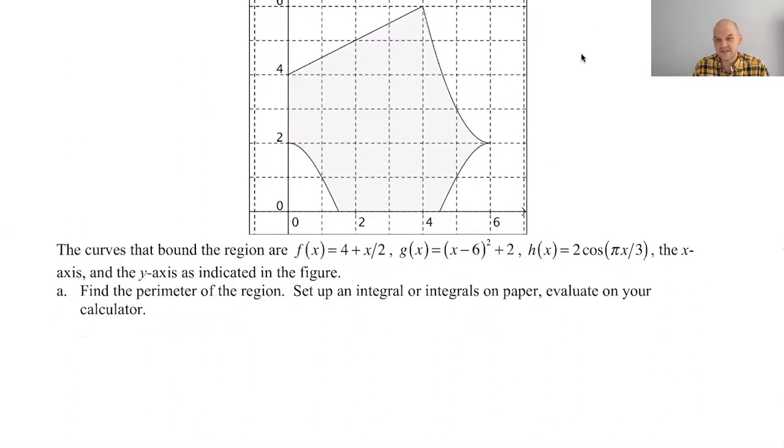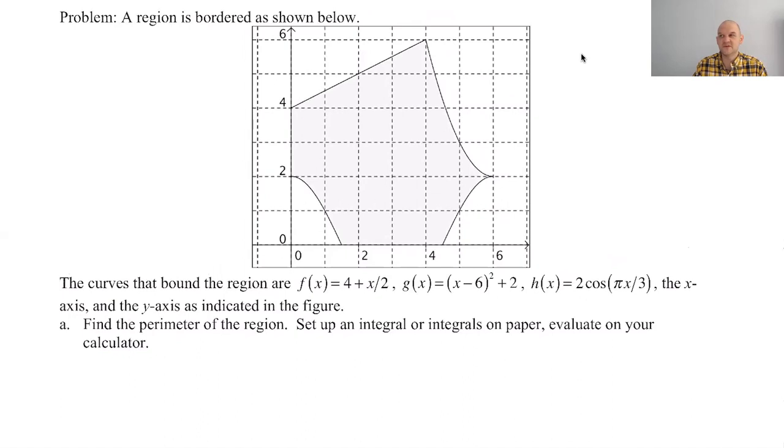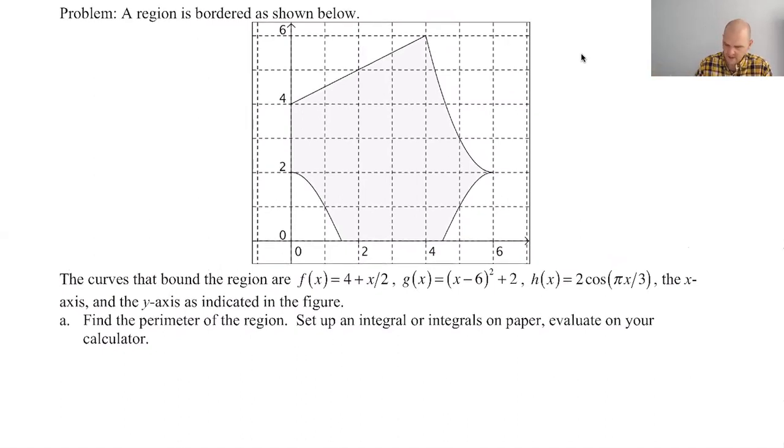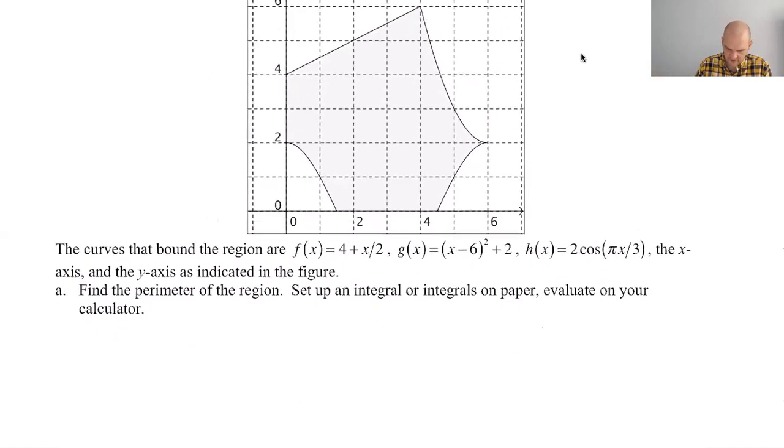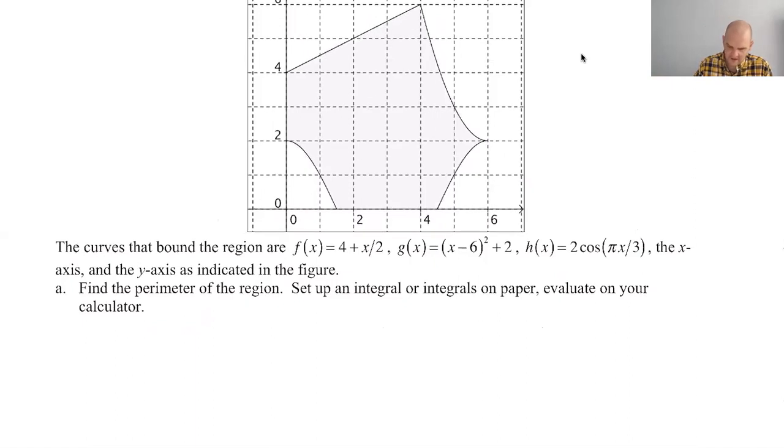And including on the AP exam, sometimes they ask this kind of question and they'll be like all this fancy stuff and then just like plus three. And everybody's like, why is three there? It's like, oh, because of that horizontal section or whatever. So let's see what we can do. Find the perimeter of the region and set up an integral or integrals.